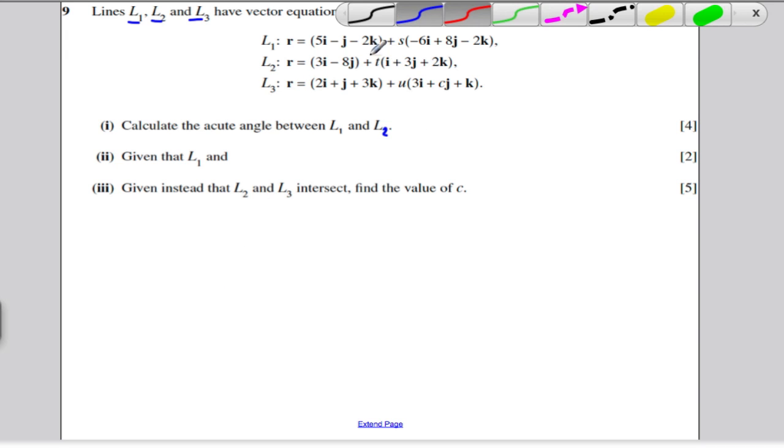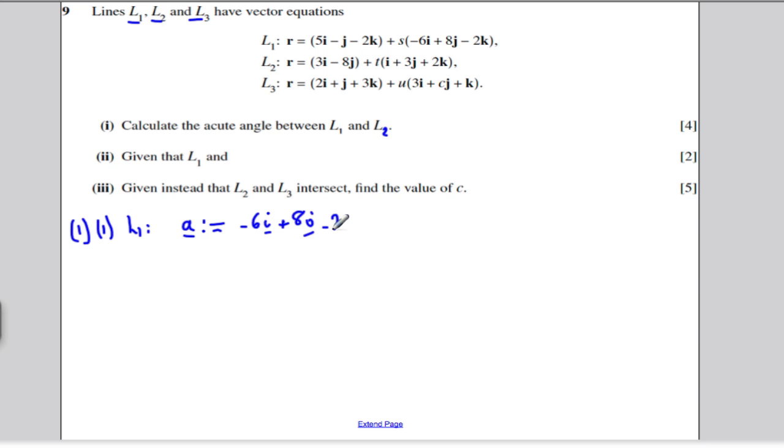So all you're interested in is the direction vectors when you're trying to find the angle between two lines. You don't care about these initial position vectors, a point on the line, no interest to you. You just care about the direction vectors of the line. So that's the sort of theory behind it. I'm going to rub all this away. I'm going to do a bit of defining here. I'm going to say, with regard to line L1, I'm going to define the vector A to be defined to be the direction part of the line L1. So I'm going to say that is equal to minus 6I plus 8J minus 2K. And I'm going to let, with regards to line L2, I'm going to let B, I'm going to define this vector B to be the direction vector of this line, namely 1I plus 3J plus 2K.